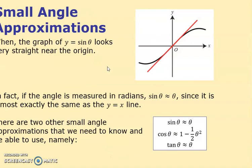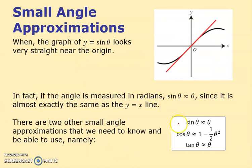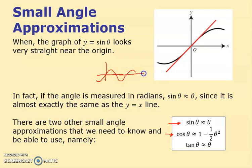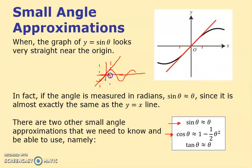There are three approximations we need. We've seen the first one already: cos theta is roughly equal to one minus half theta squared. The other two are much easier. Sine theta is roughly equal to theta. The sine graph does this wave, but what I care about is this in-between region. You can look at it and go: it looks pretty straight. For small values of theta, it only works if you only go so far either side of the y-axis.